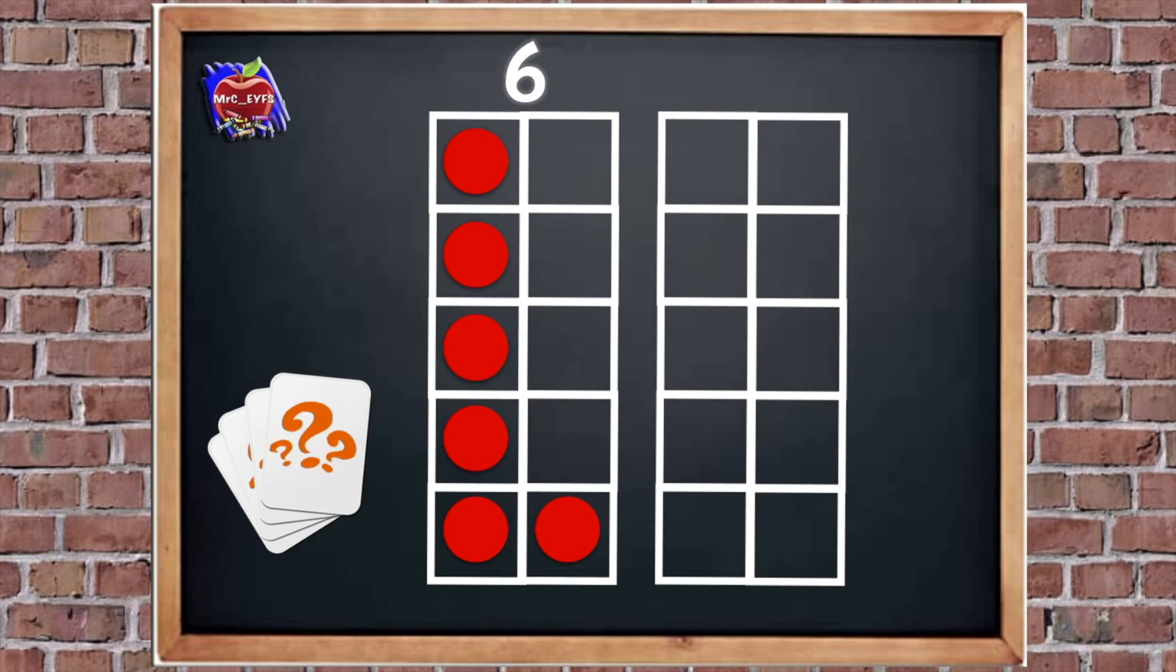Let's choose another card. Are you ready? Here we go. Right, what number is that? Nine. So I'm going to put nine into my other frame. Are you ready? We've got five, six, seven, eight, nine. So now we've got nine. We've got six and we've got nine.